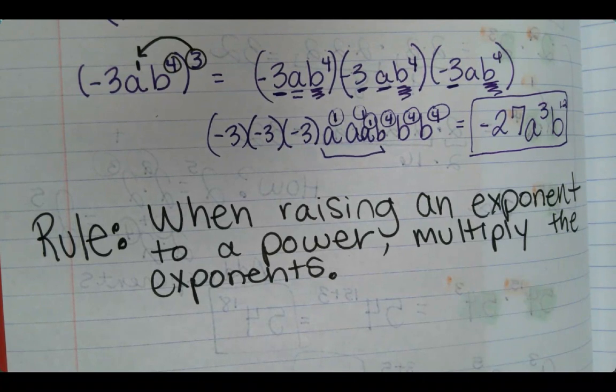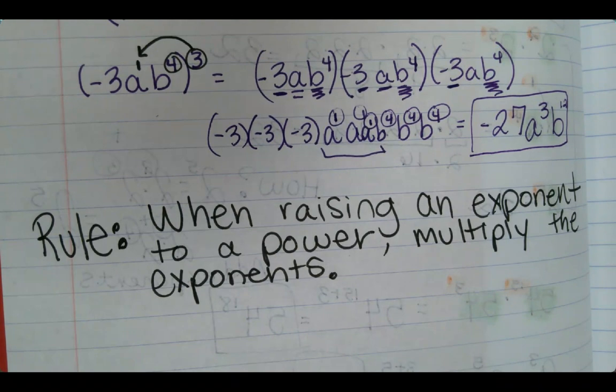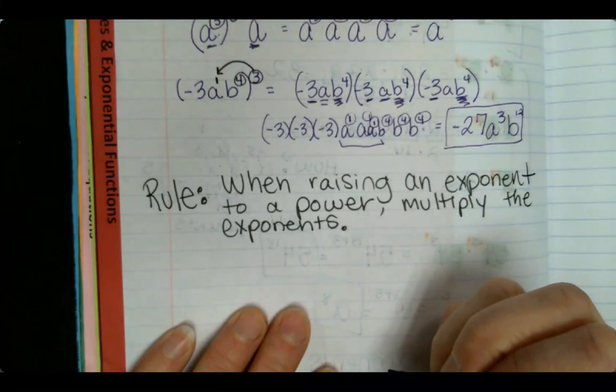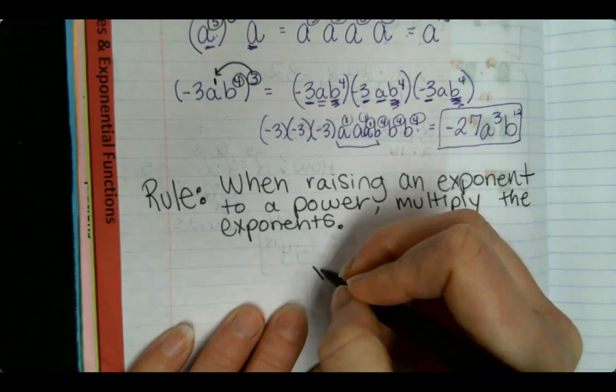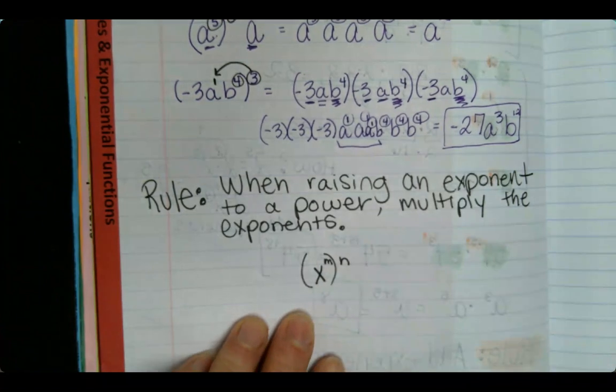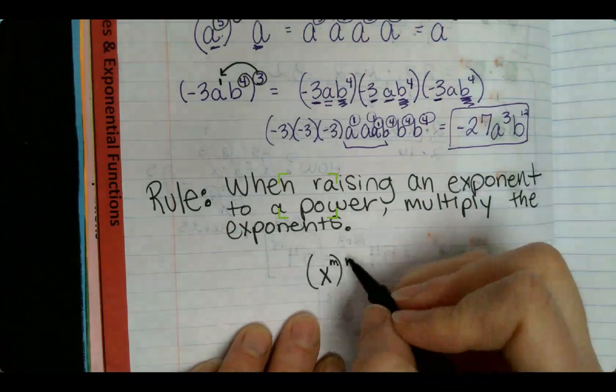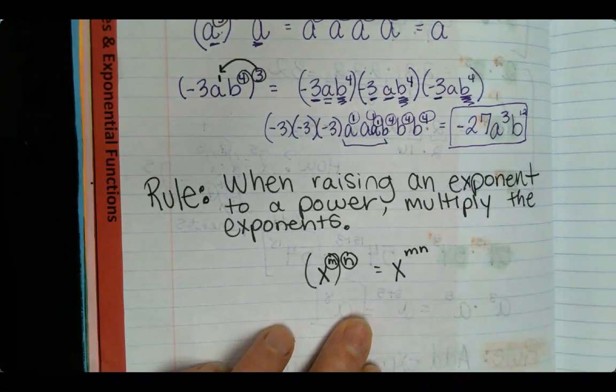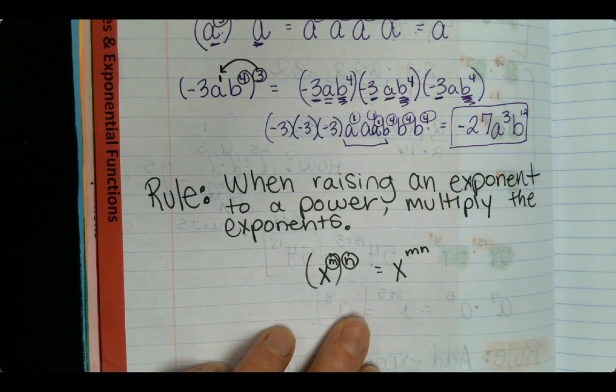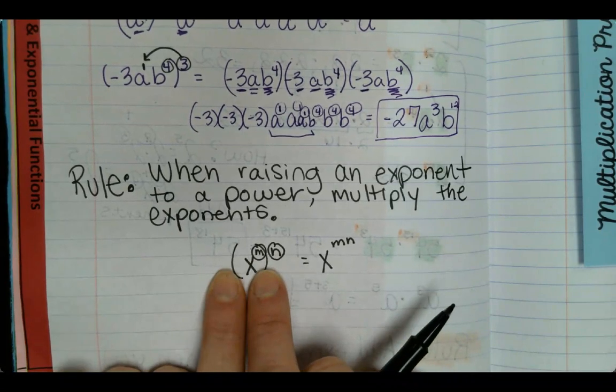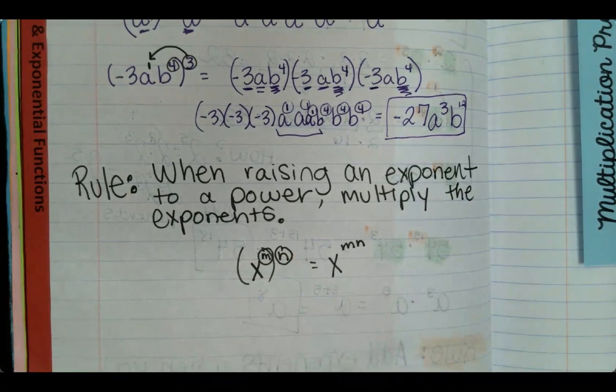You'll also hear me say the word, send the power in, or send the exponent in. It's kind of like distribution. You're sending the exponent to every single exponent inside the parentheses. So it's like x to the m to the n. We're going to multiply these exponents. So it becomes x to the mn. Whatever m and n are, you multiply them. See how there's only one base, and there's a parentheses, an exponent on the inside, exponent on the outside? That's when you know to multiply those.